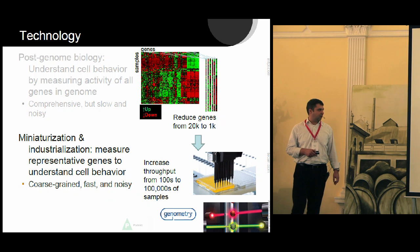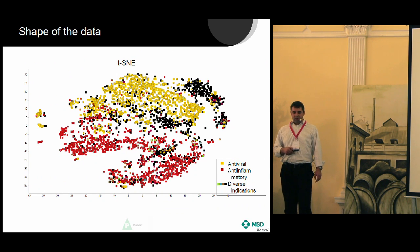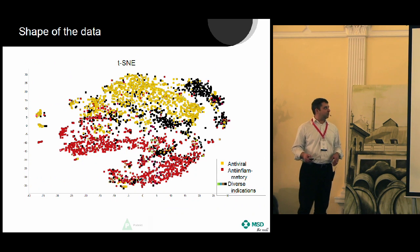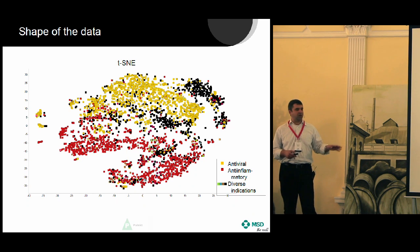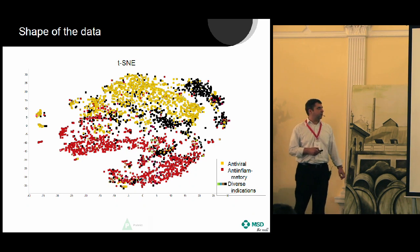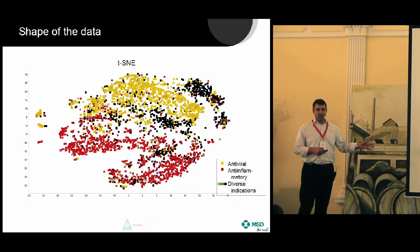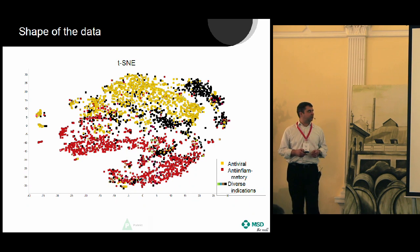This is being commercialized by a company called Genometry that we're working with. This is what the data looks like: one experiment of about 7,500 samples projected to two dimensions using T-SNE, a dimensionality reduction approach. The axes don't mean anything; what's important is the proximity of points. Two points that are close together have similar gene expression profiles.